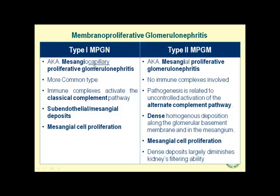Pay attention to the homogenous and dense intramembranous deposits in type 2, which make the capillary loops ribbon-like and thick — this helps differentiate type 2 from type 1 cytologically. In both type 1 and type 2, mesangial cells increase in number and cause hypercellularity. The keyword 'mesangial' appears in the descriptive name of both conditions. The nephritic condition presenting with the most profound hypercellularity is post-streptococcal glomerulonephritis — the prototype of nephritic syndrome.